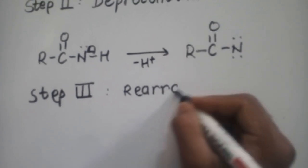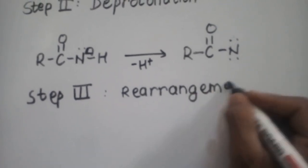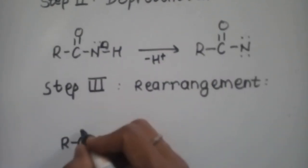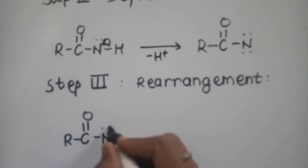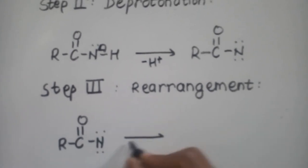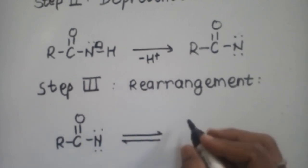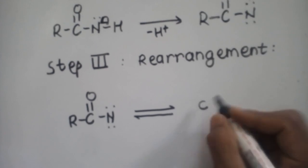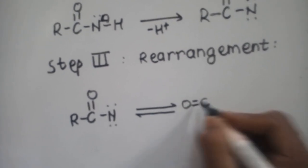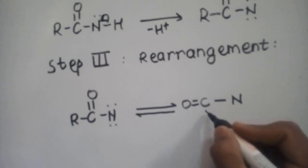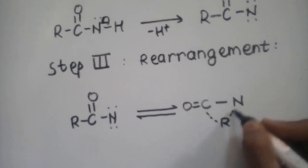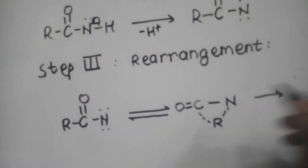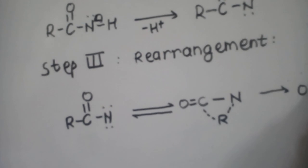Step 3 is the rearrangement of the alkyl or aryl group. Here it forms a bridge between the carbon and nitrogen — this bridged transition state is key to the Lossen rearrangement mechanism.